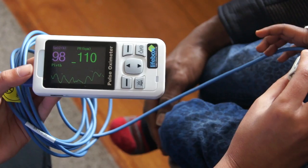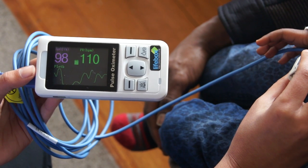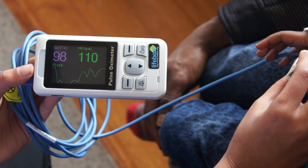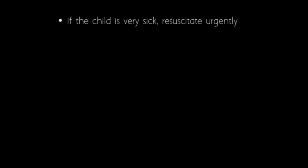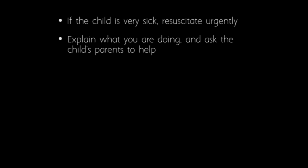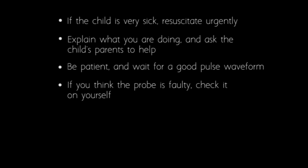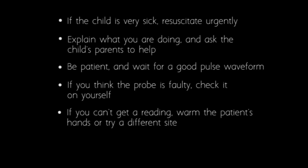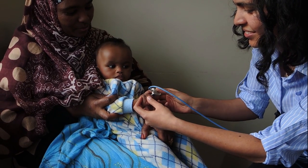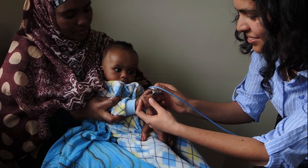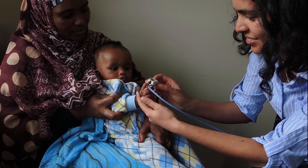We have now learnt how to use pulse oximeters for children and newborns and how to respond to common challenges. Expert tips to summarise: If the child is very sick, resuscitate urgently. Explain what you are doing and ask the child's parents to help. Be patient and wait for a good pulse waveform. If you think the probe is faulty, check it on yourself. If you can't get a reading, warm the patient's hands or try a different site. Oximeters are a vital tool for identifying low oxygen levels so that treatment can be started quickly and appropriately before complications arise.